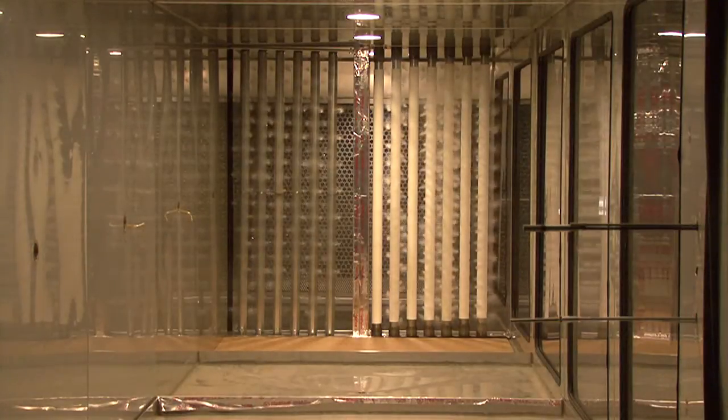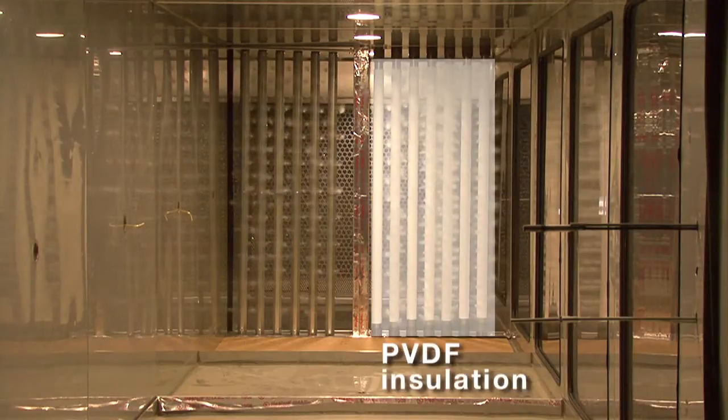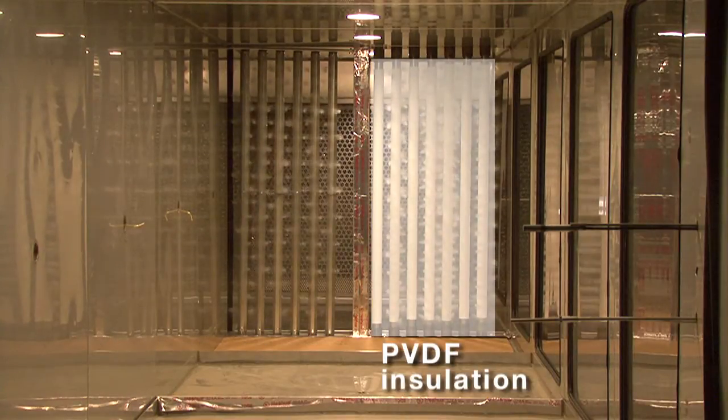On the left are dispersion tubes each insulated with stainless steel shielded air gaps. On the right are dispersion tubes insulated with polyvinyl iodine fluoride, commonly called PVDF.